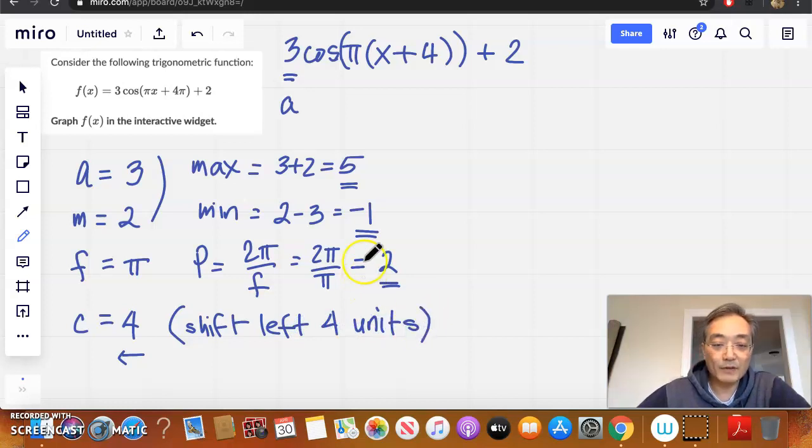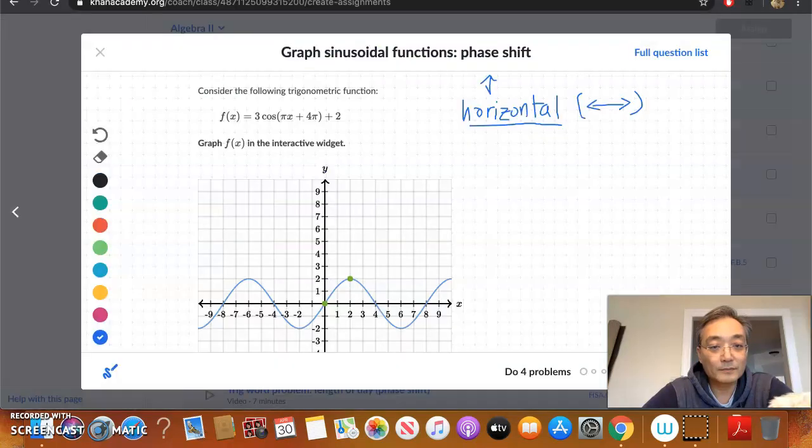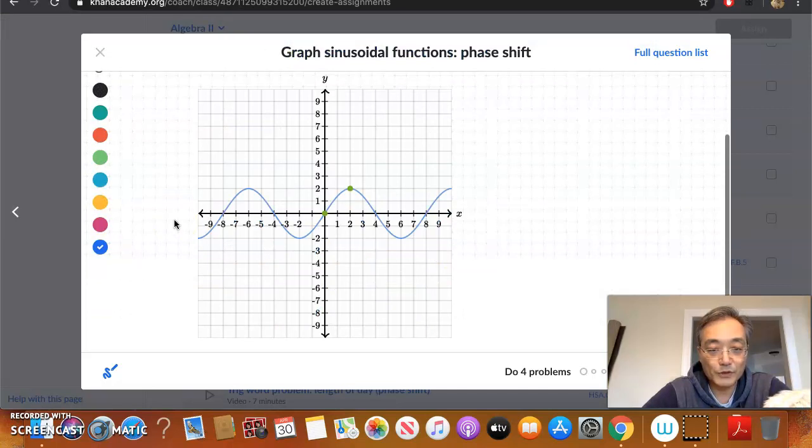So let's do it. And they want us to do it using the interactive widget. So max is 5, min is negative 1, period is 2. This is cosine, right? Positive cosine. So it starts at the max. So let's go back to our function. And let's use the interactive widget.